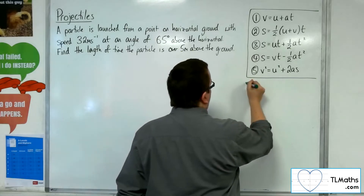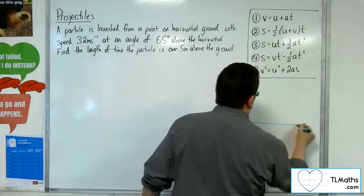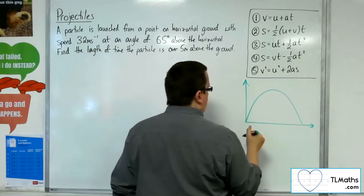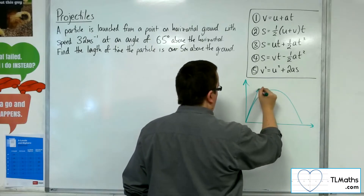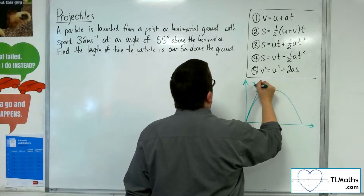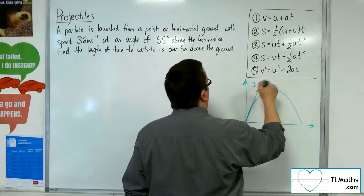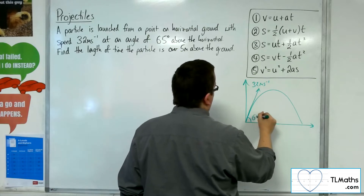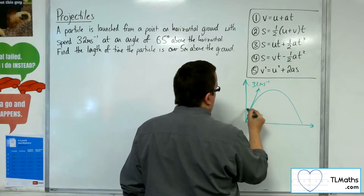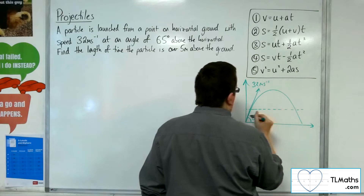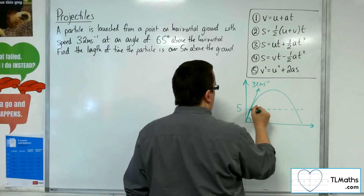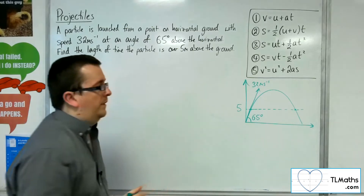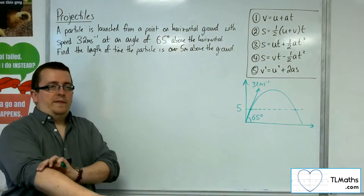So visually, we've got this particle projected up into the air at 32 metres per second at an angle of 65 degrees to the horizontal. And we want to know the total amount of time the particle is above that 5 metre line.